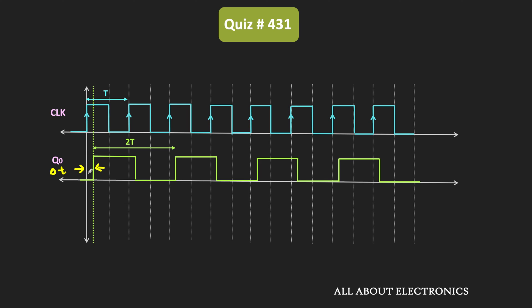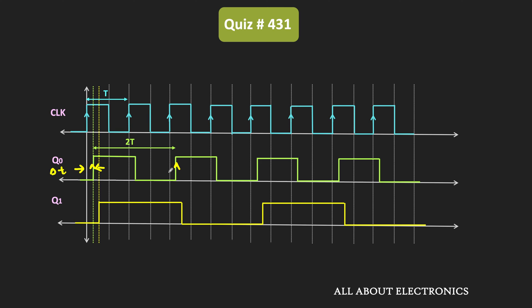The Q0 waveform acts as a clock pulse for the second flip-flop, and the second flip-flop responds to this clock at every rising edge. But as you can see, it responds after the time Δt, making this duration equal to Δt. Measured from the original clock edge, this total delay is equal to 2Δt. The Q1 waveform repeats after a duration of 4T, meaning it repeats after four cycles of the clock pulse. This is the output waveform of Q1.